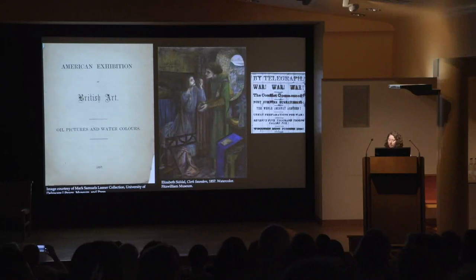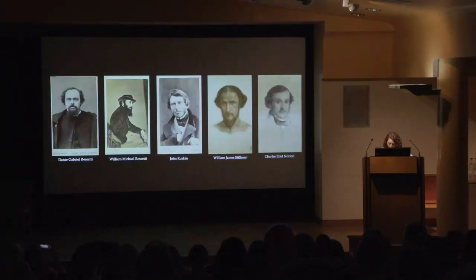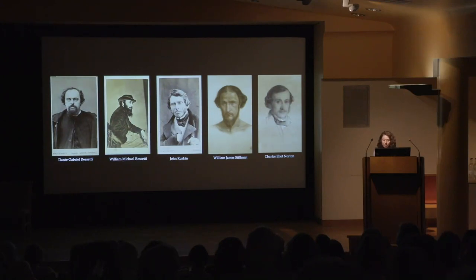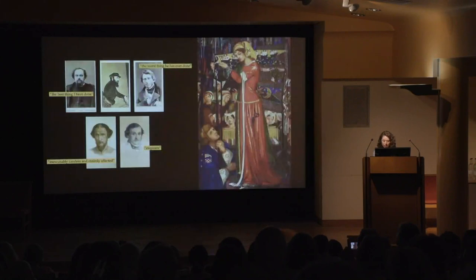Throughout this period, a rich correspondence among five individuals proliferated. Between mid-1857 and late 1862, a month rarely passed without a letter crossing the Atlantic, between Rossetti, his brother William Michael, and Ruskin in London, and Stillman and Norton in New York and Boston. The most frequent topic of conversation was Before the Battle.